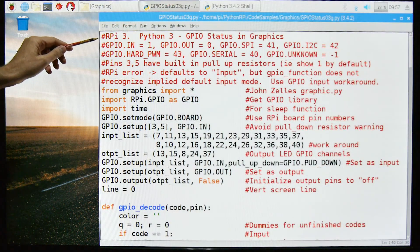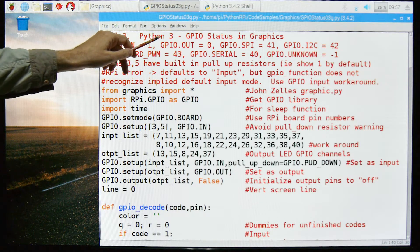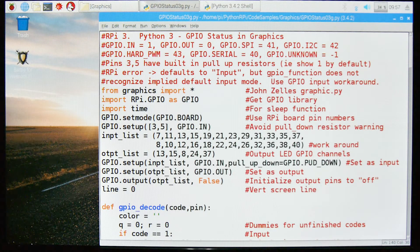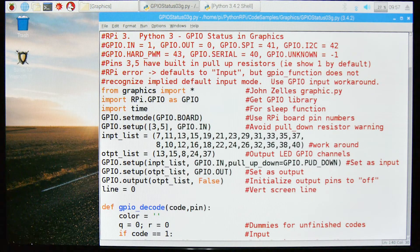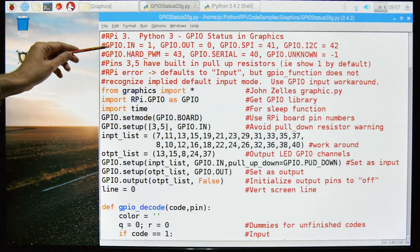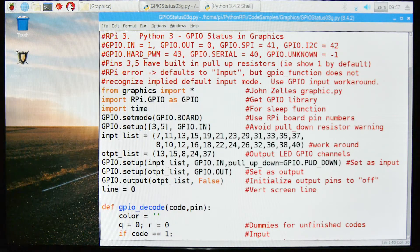The program in front of you is written for an RPI 3, hardware version 3. It's in Python 3 and the function of this program is to report the GPIO pins, the status, in both graphics and text mode. These are just some of the modes that you can have. You have IN equals 1, OUT equals 0, and so forth.